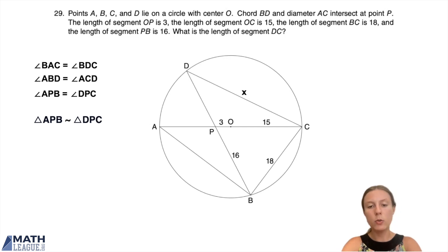And we know side BC is 18, that's right on the diagram. We don't know AC, but that's easy enough to find. OC is 15, that's the radius, so the diameter is 2 times 15, which is 30.